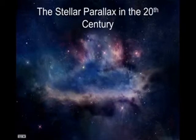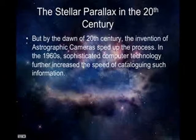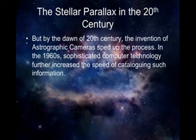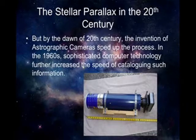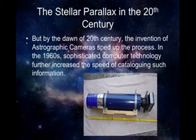By the dawn of the 20th century, the invention of the astrographic camera sped up this process. In the 1960s, sophisticated computer technology further increased the speed of cataloging such information. As a bonus note, they actually use the parallax effect in 3D cameras — those glasses you put on when watching a movie actually use the parallax effect to create a 3D image.